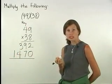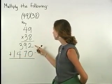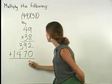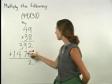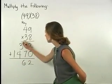Our final step is to add the 2 rows we created. So we have 2 plus 0, which is 2. 9 plus 7, which is 16. So we write a 6 and carry the 1.